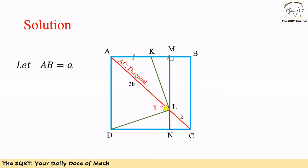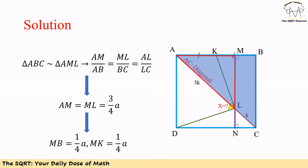Since the new line is parallel to AD, we will have two right angles at M and N. Now let's focus on two triangles: triangle ABC in blue and triangle ALM with the red border. We are going to show these two triangles are similar, because angle A is common to both triangles and angle M and angle B are both 90 degrees. Since these two triangles are similar, we can write AM/AB = ML/BC = AL/AC. Using 'a' for both AB and BC, we get AM = ML = (3/4)a.